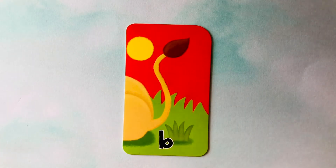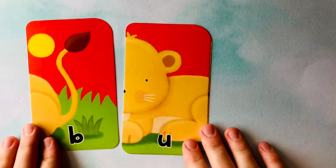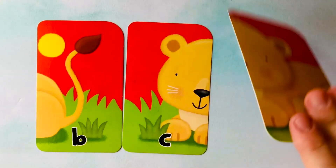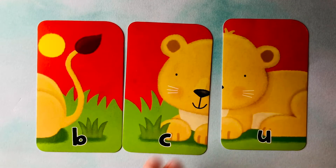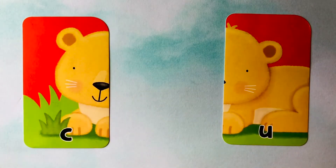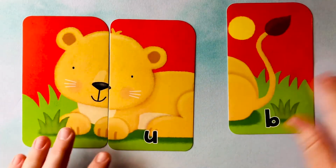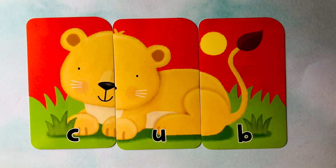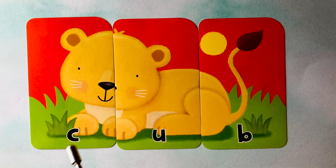Looks like we're starting off with a B. We also have a U. And we have a C. This kind of looks like a lion, but not an adult lion. It looks like a baby lion. Do you know what those are called? They're called cubs. Cub starts with a C. In the middle is a U. And it finishes with a B. Can you spell it with me? Cub. C-U-B. Cub is spelled C-U-B. C-U-B spells cub.